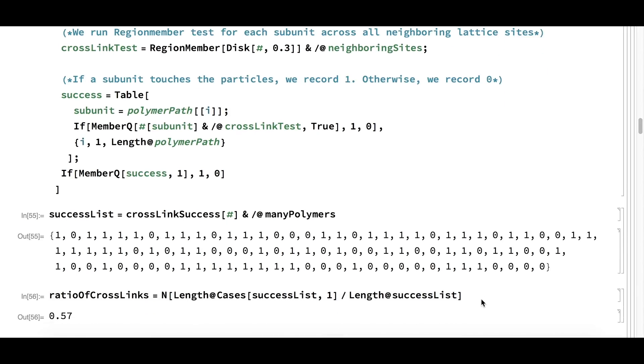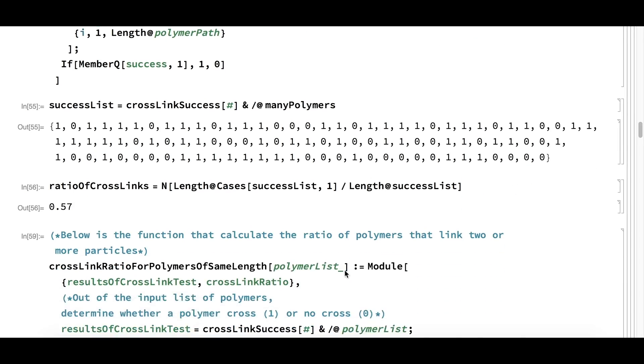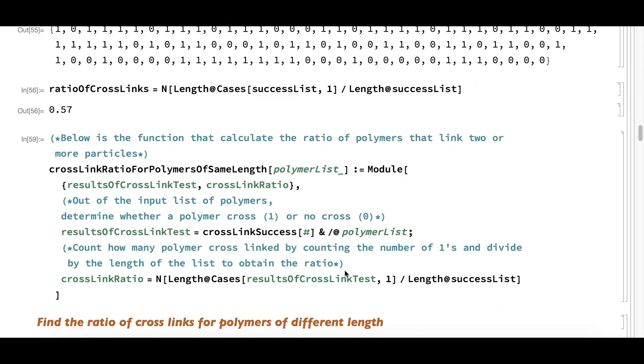We want to know the ratio of the cross-linked polymers to the total number of polymers. We do this by dividing the number of successfully cross-linked polymers by the total number of polymers. Below is a function that calculates the ratio of polymers that link two or more particles together.